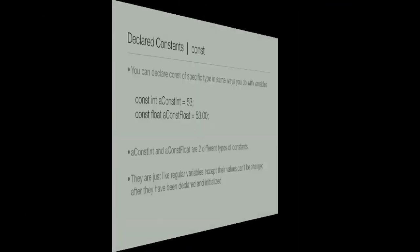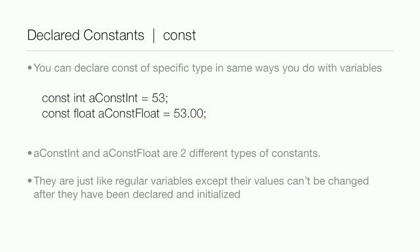Now there's two different types of constants. The first is declared constants, and it is just const. You declare the const of a specific type in the same way you do with variables. So just forget about the const in front of these two lines of code and it's just a regular declaration: const int a const int equals 53, and then you add that const in front.